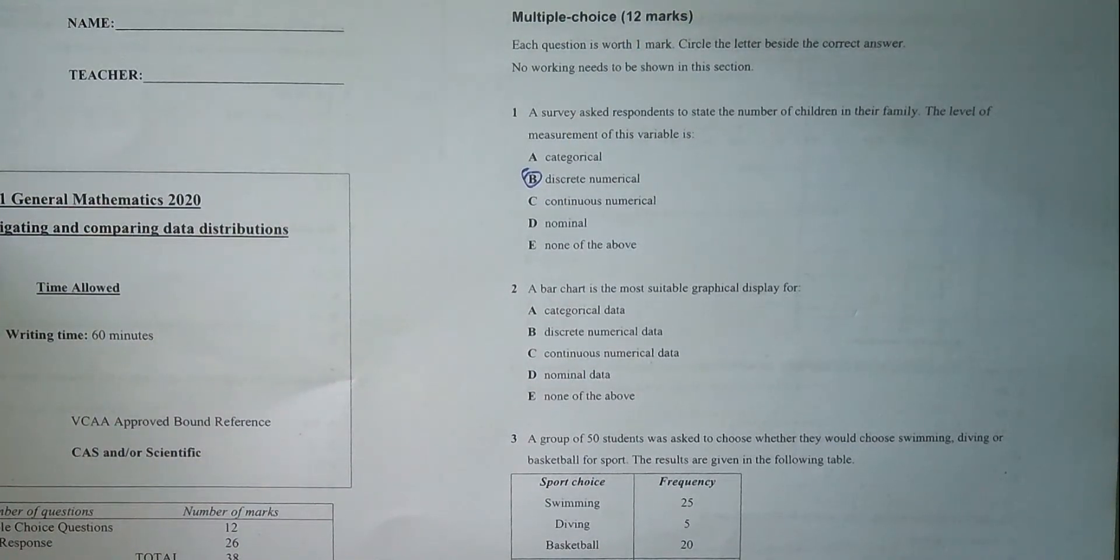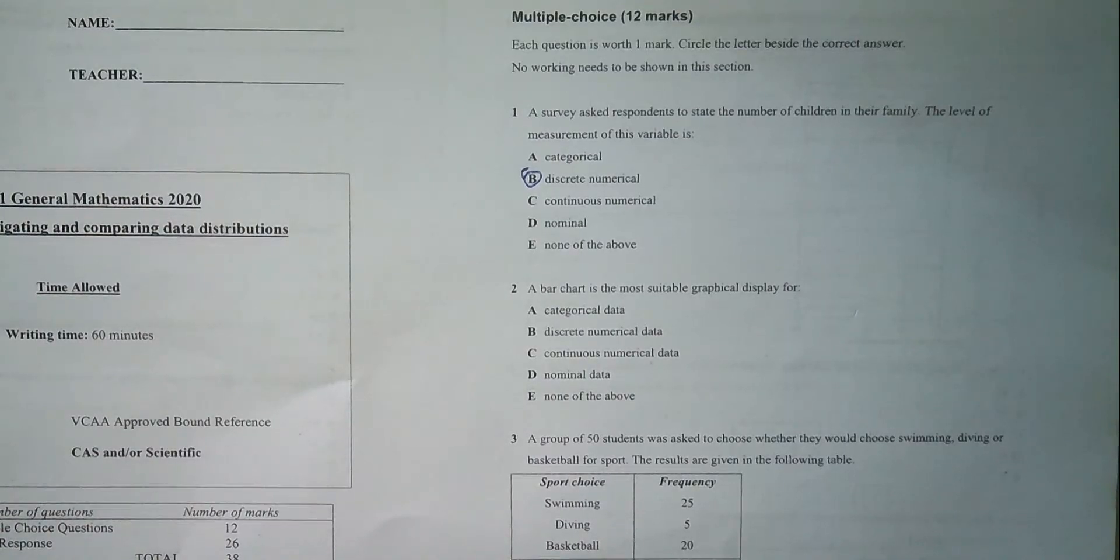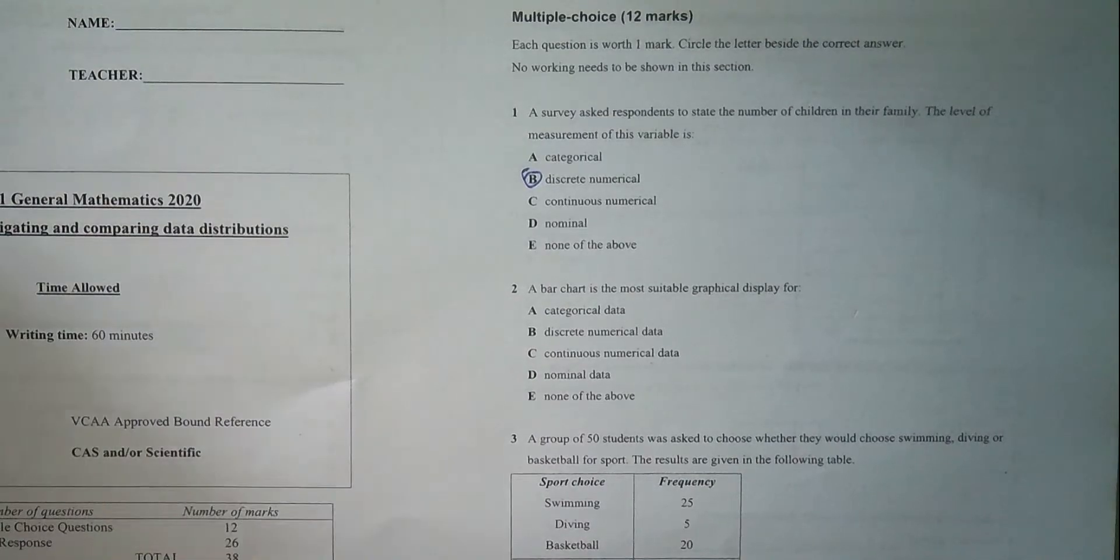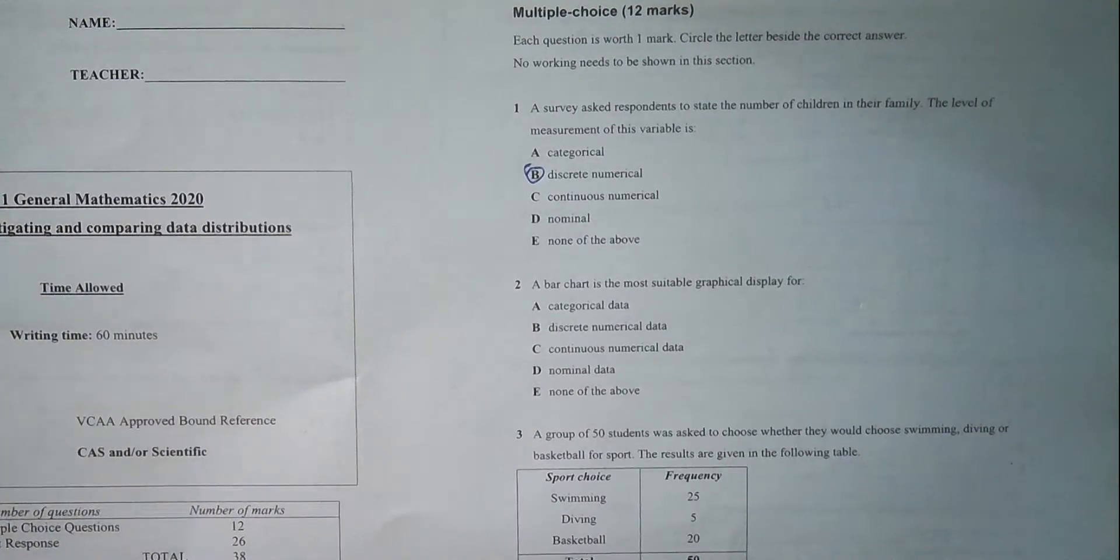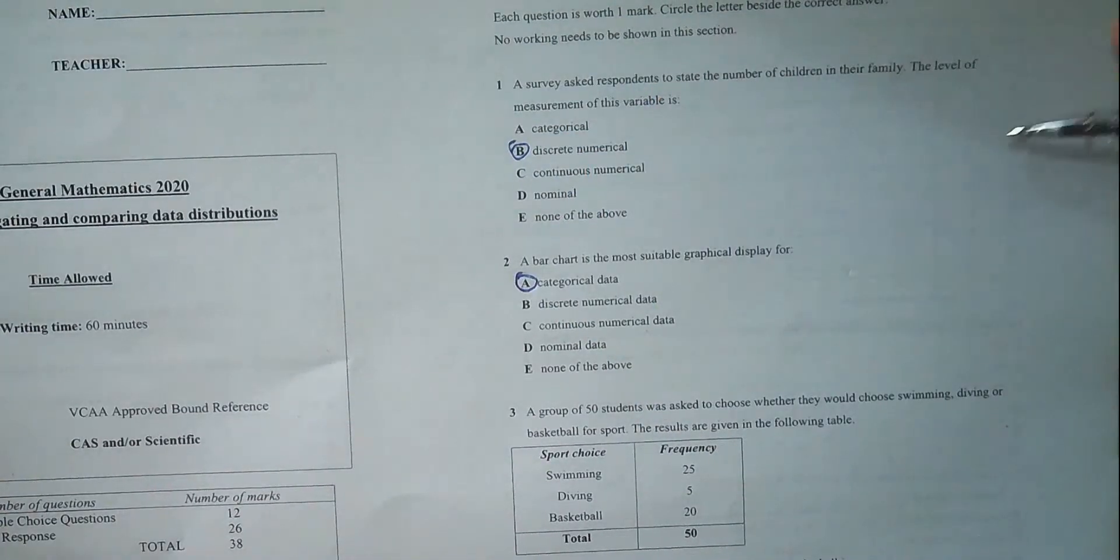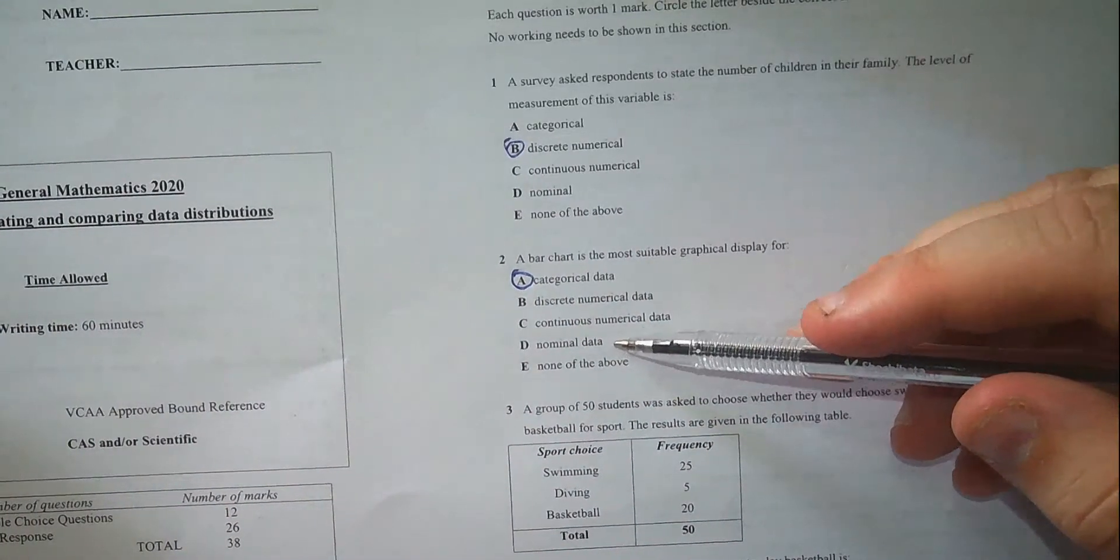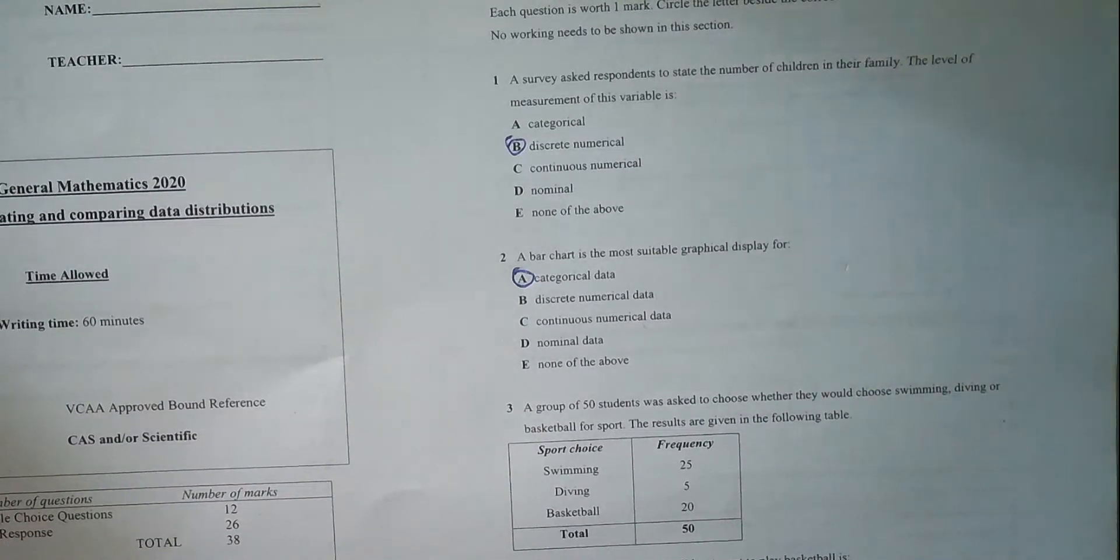A bar chart is the most suitable graphical display for - the difference commonly between a bar chart and a histogram is histogram is better for numerical data, bar charts are better for categorical data. So looking at the data we have here, the correct one should just be categorical. It's technically fine for nominal data as well, but overall A is a more correct answer.